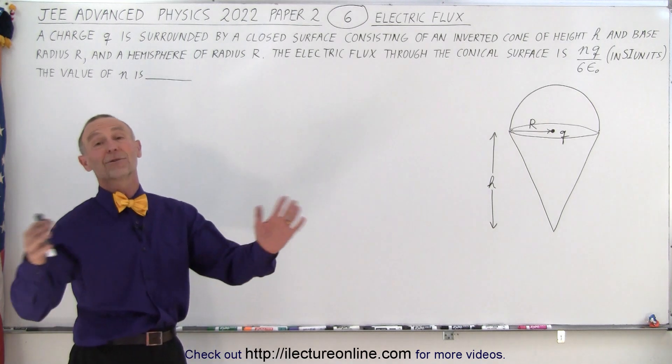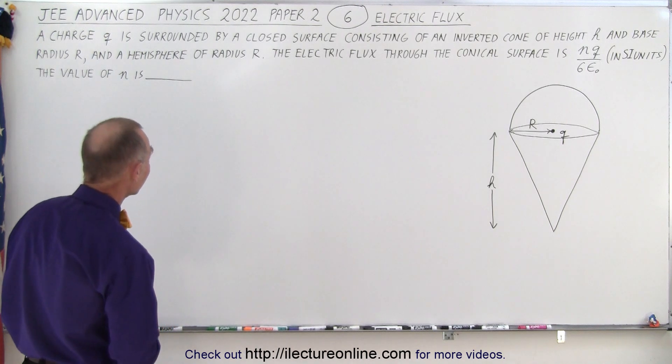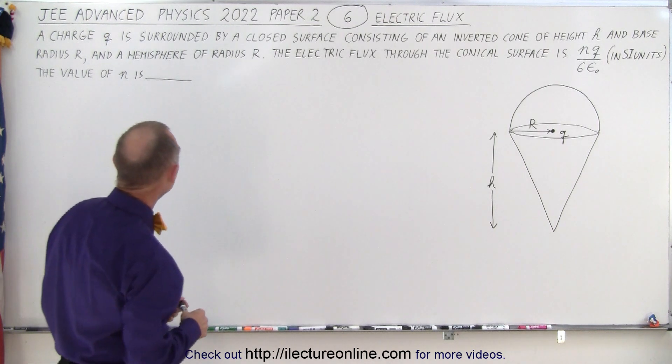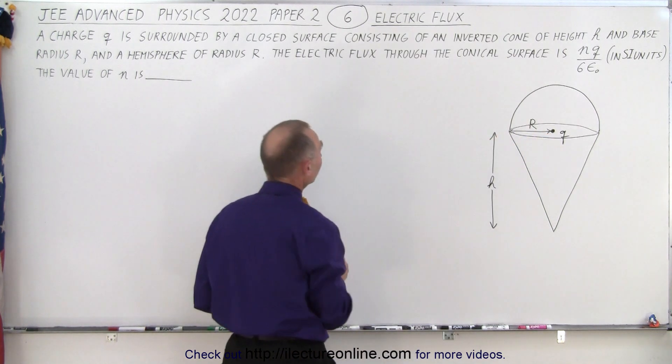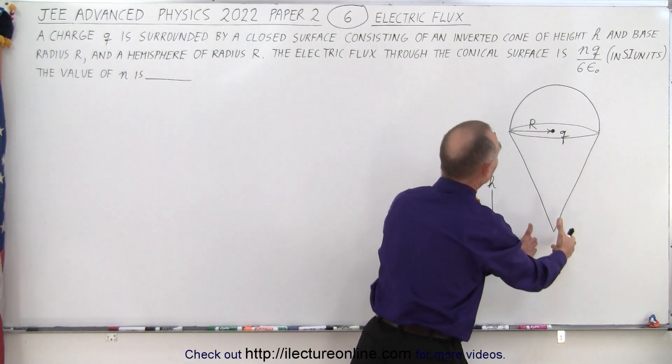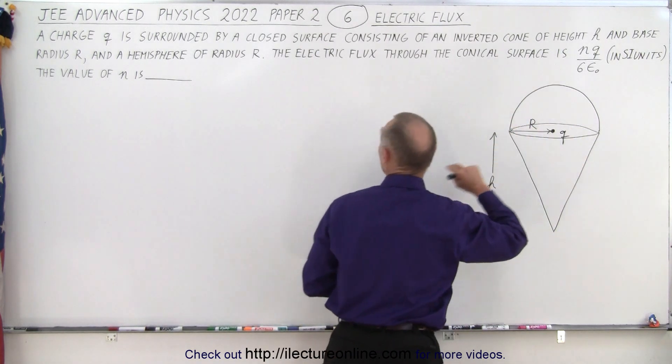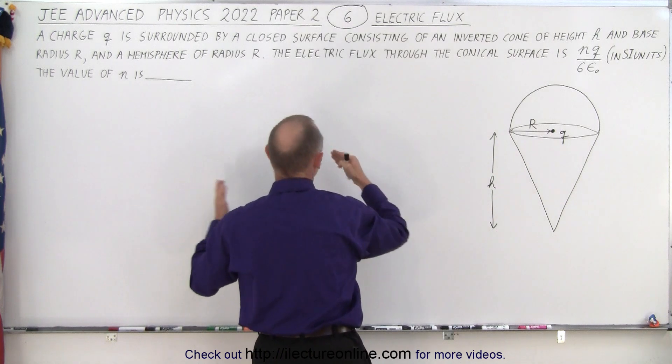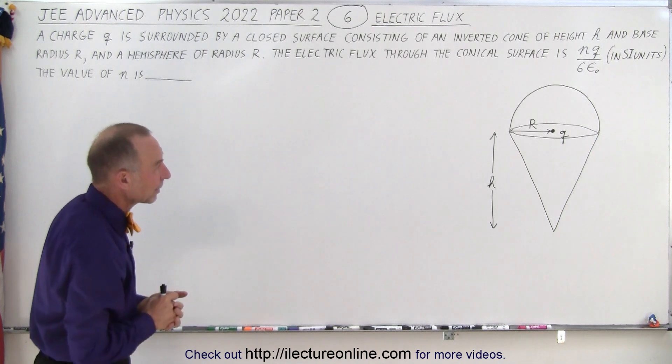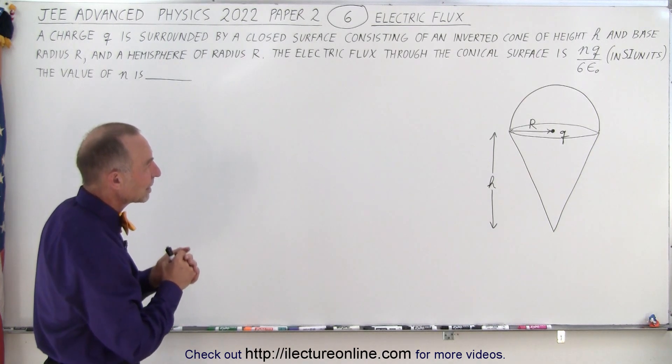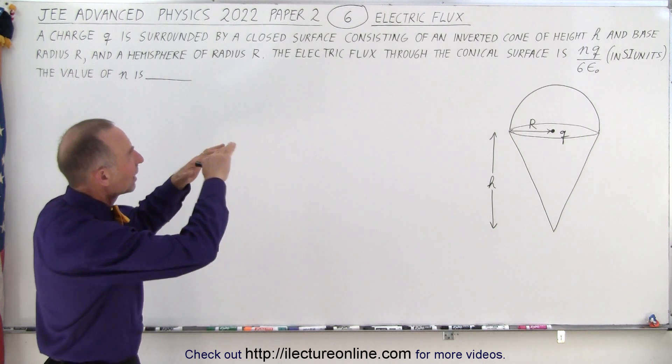I'll show you why. Of course, it takes more than 30 seconds to read the problem and orient ourselves to what we need to do. It says here that a charge Q is surrounded by a closed surface consisting of an inverted cone of height h and base radius r, and a hemisphere of radius r on the other side. They give us the figure. The Q is right there at the center of the base of the inverted cone and at the center of the base of the hemisphere.